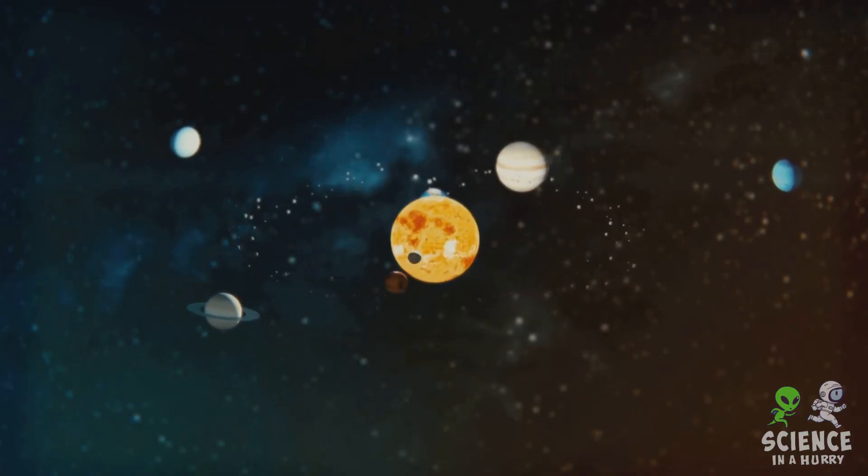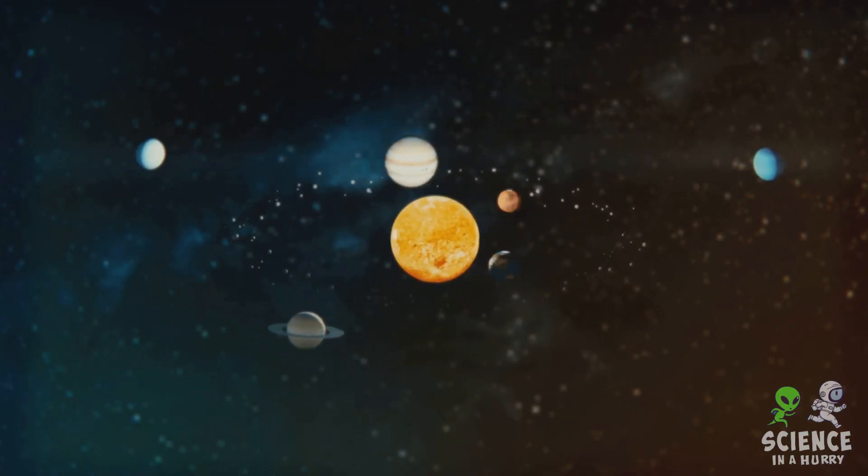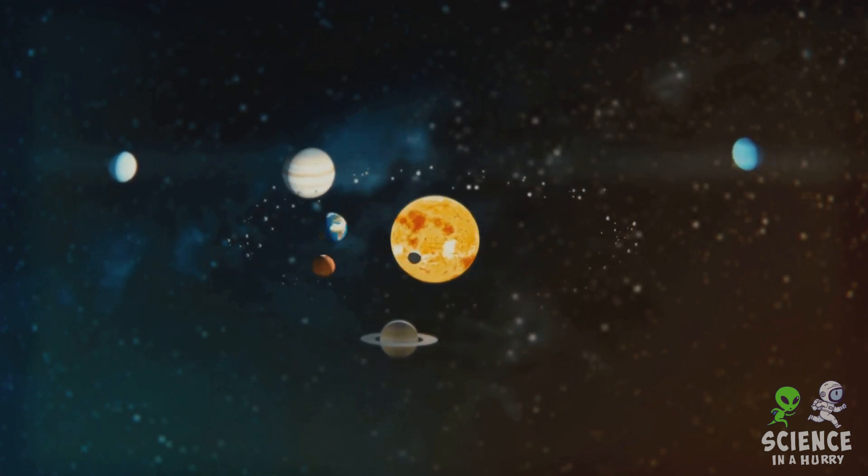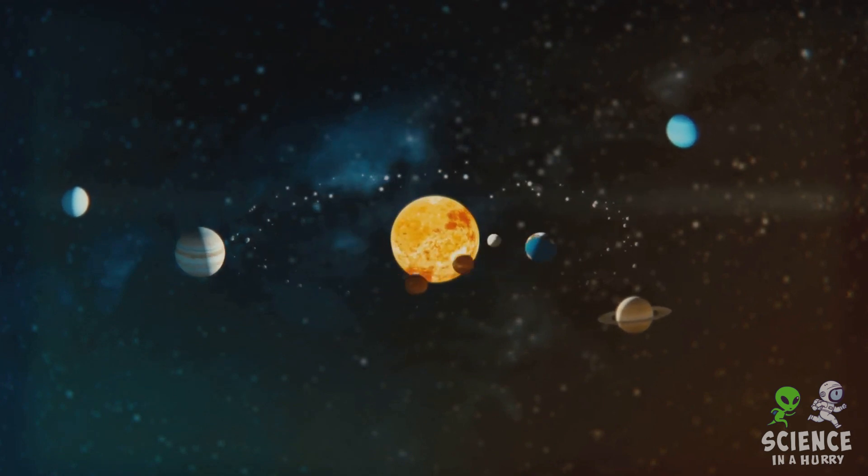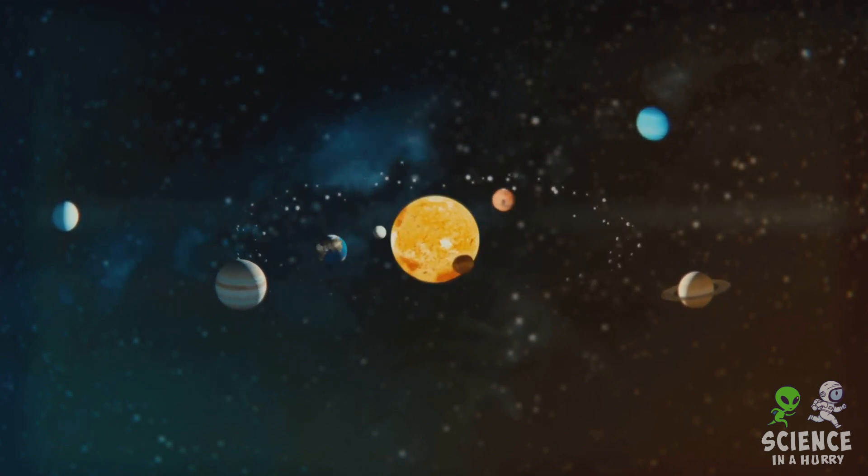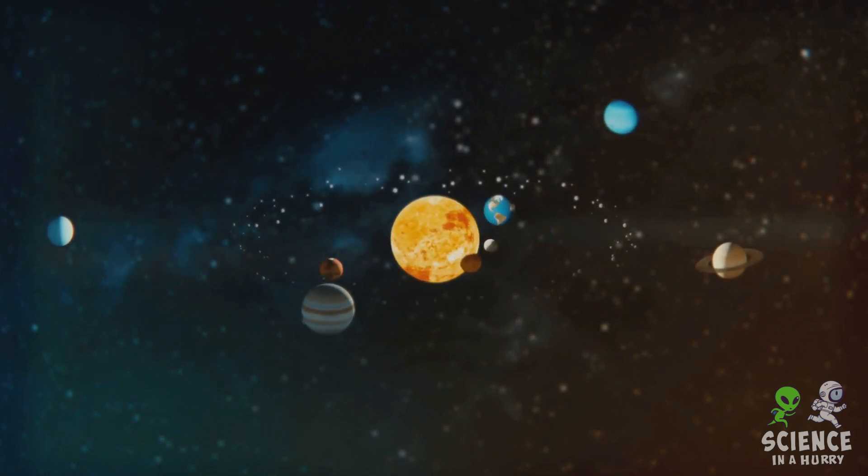As the solar system matures, its components settle into a more stable configuration. Planets find their orbits, rings form around gas giants, and the remaining debris either coalesces into smaller bodies or is ejected from the solar system.